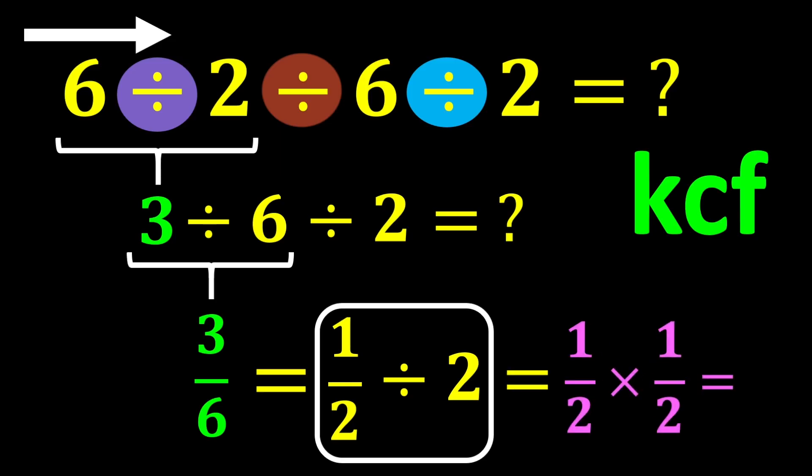According to the KCF rule, we keep 1 over 2 as it is. Division is changed to multiplication, and 2 is flipped and becomes 1 over 2. Finally, 1 over 2 multiplied by 1 over 2 gives us 1 over 4. So, our final answer is 1 over 4.